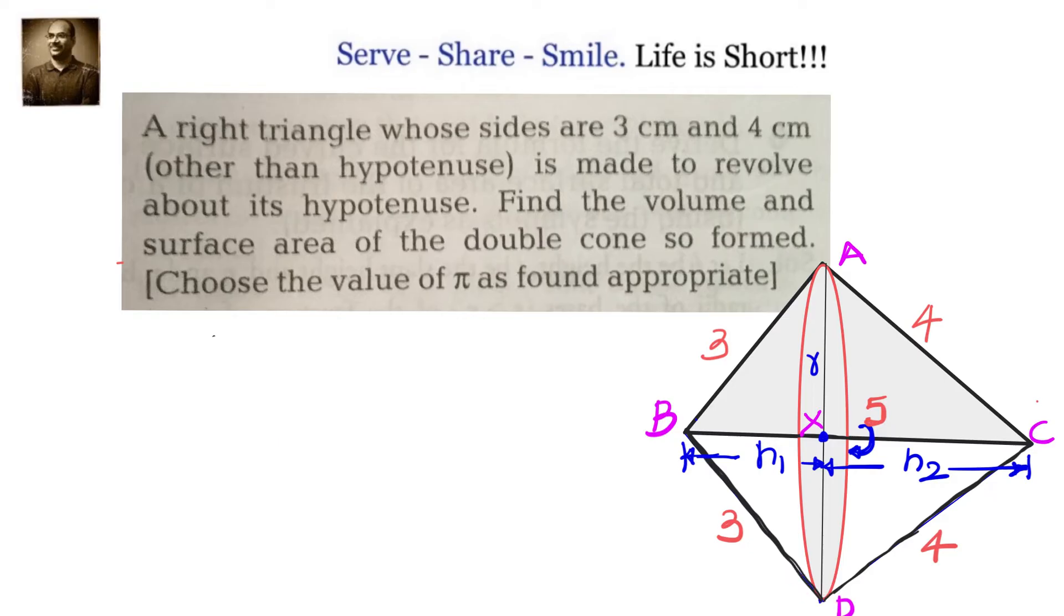You can see that one cone is ABD, another cone is ACD. For both the cones the radius is the same. The heights are different. They add up to 5 and their slant heights are 3 and 4.